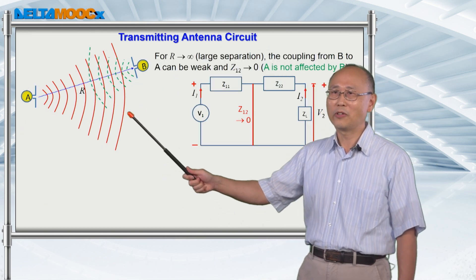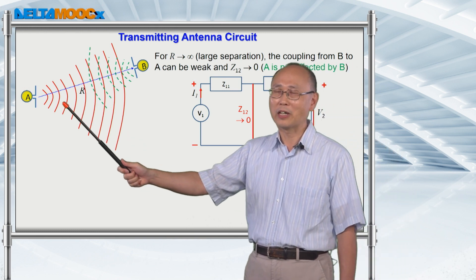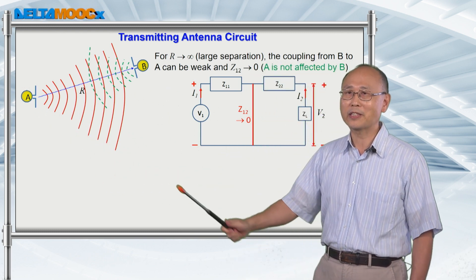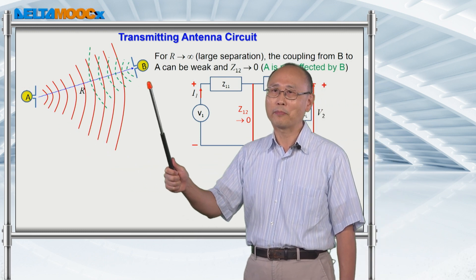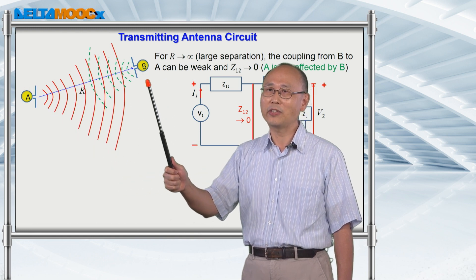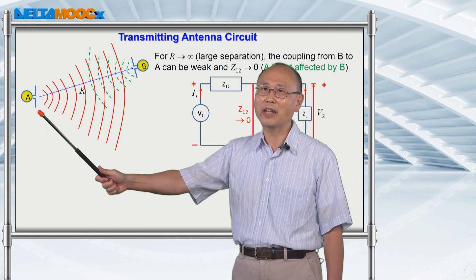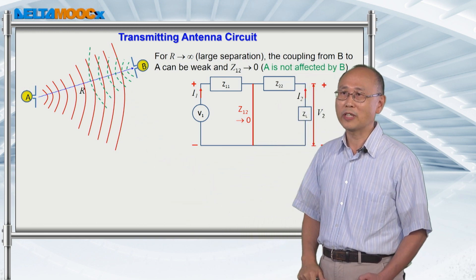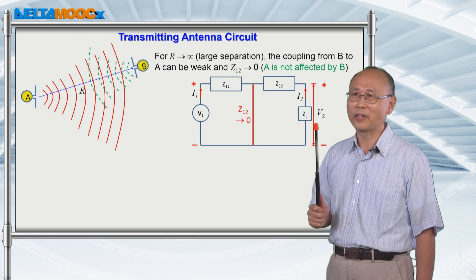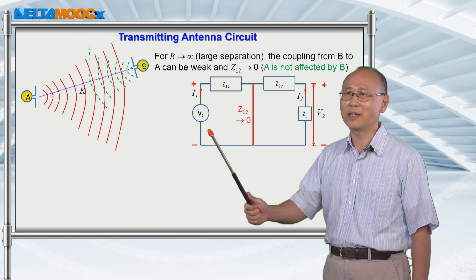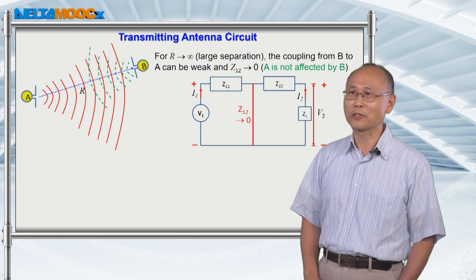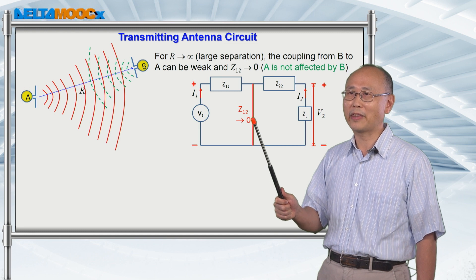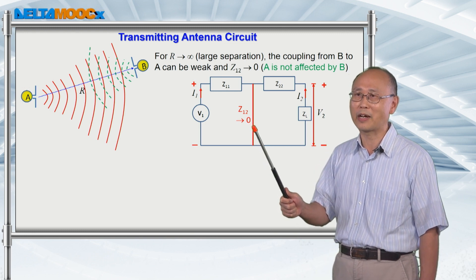Now let's look at this configuration a little bit carefully, because there's a difference between A and B in terms of who is sending the signal and who is receiving the signal. In this case, antenna A is sending the signal, and antenna B is receiving the signal. So apparently, the energy received by antenna B depends on the energy coming from antenna A, and the backward scattering of the signal is generally very weak. This means that for the transmitting antenna circuit, you can in general ignore this coupling impedance Z12.